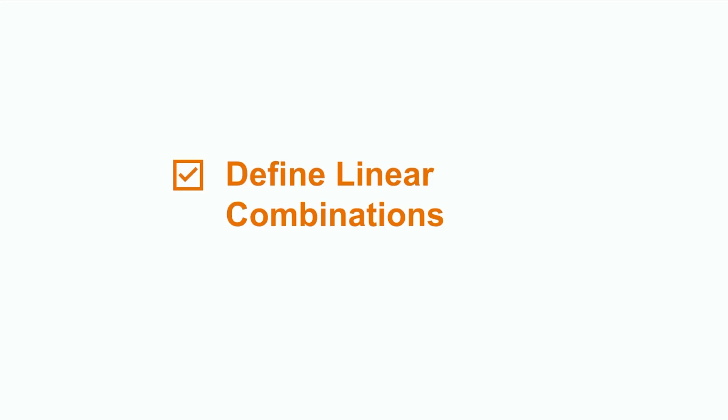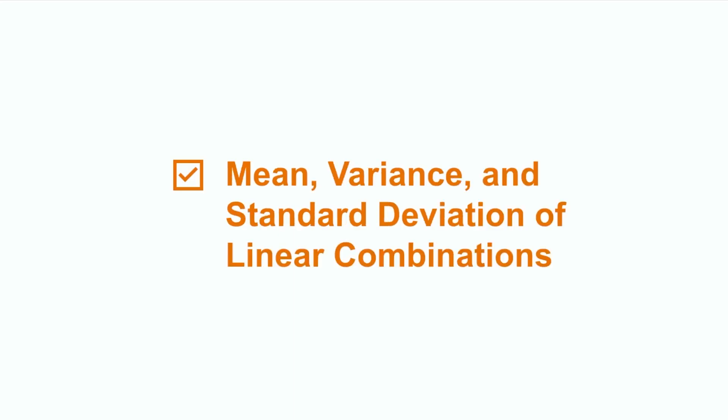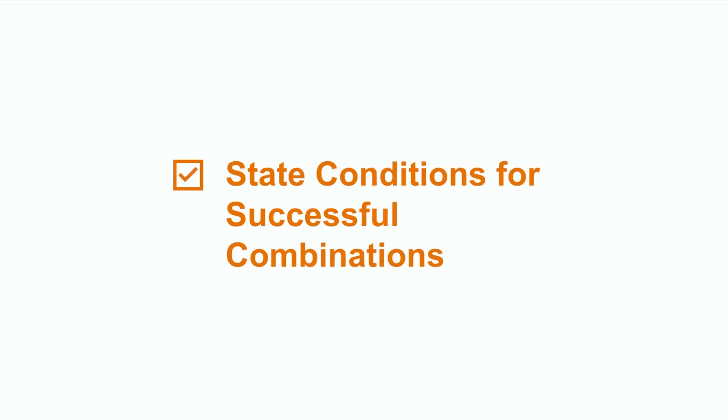In this lesson we covered the basic concept of a linear combination, then applied linear combinations to random variables and discussed the effects on the mean, variance, and standard deviation of the combined random variable. We particularly noted how the variance of a combined variable is always additive, even if the combined variable is based on a difference. We also discussed when it is possible to combine random variables and when this framework does not apply. For more practice on this topic, I encourage you to keep learning with other resources.